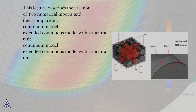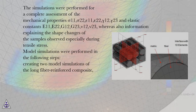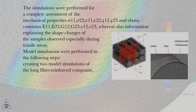The simulations were performed for a complete assessment of the mechanical properties: sigma 11, sigma 22, epsilon 11, epsilon 22, gamma 12, gamma 23, and elastic constants E11, E22, G12, G23, nu 12, nu 23 — as well as information explaining the shape changes of the samples observed especially during tensile stress. Two model types were considered: the Continuum Model and the Extended Continuous Model with Structural Unit.